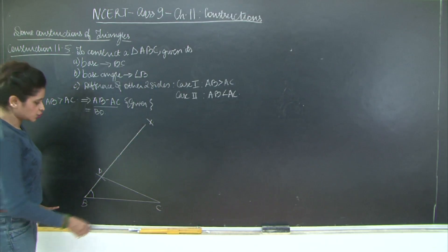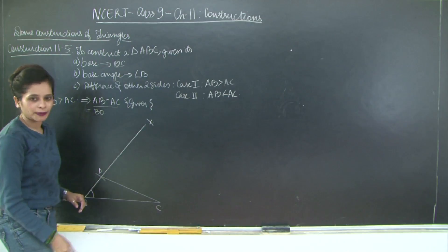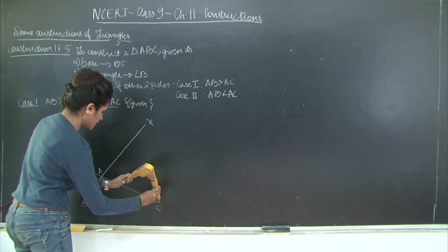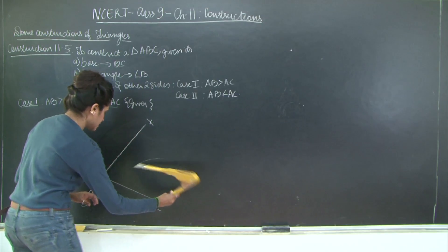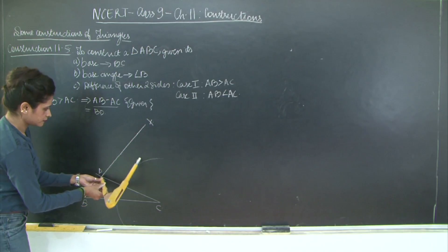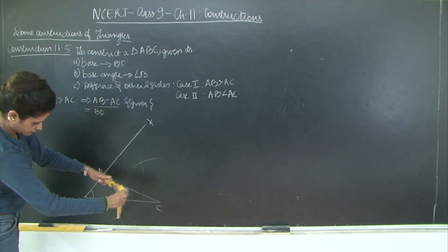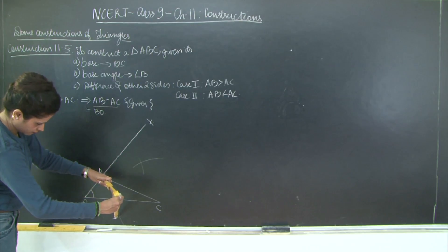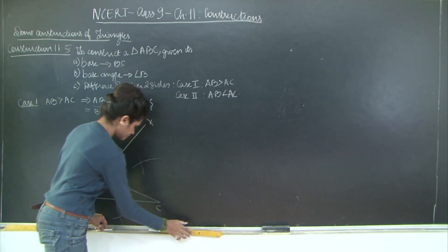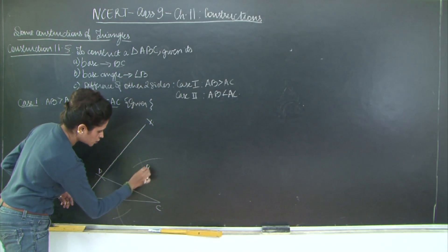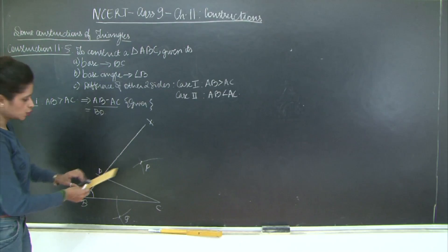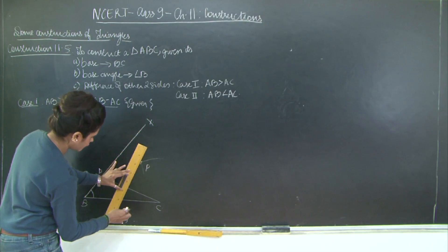Once D and C are joined, I am going to draw the perpendicular bisector of DC. To draw the perpendicular bisector, take more than half the length of DC and cut arcs on either side of DC. Let us mark the point of intersection of these two arcs as P and Q. Join PQ, which will be the perpendicular bisector of DC.